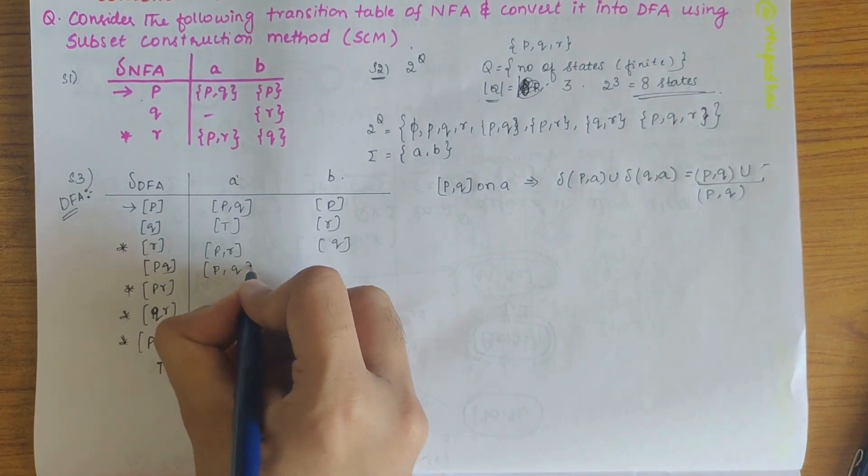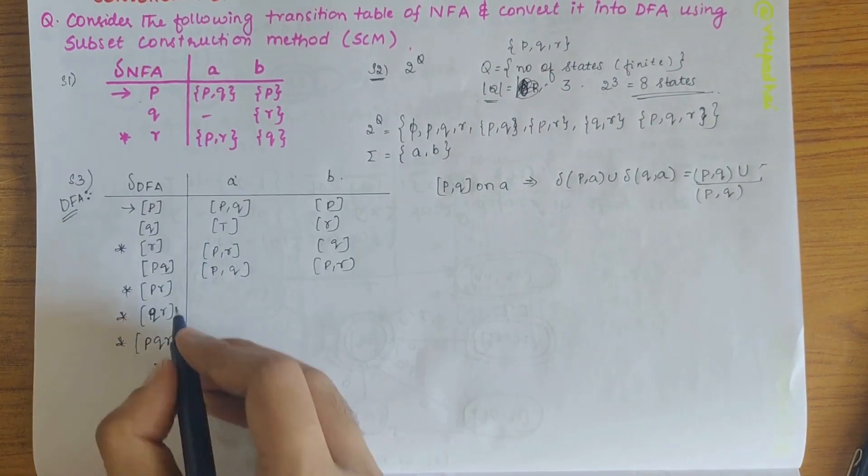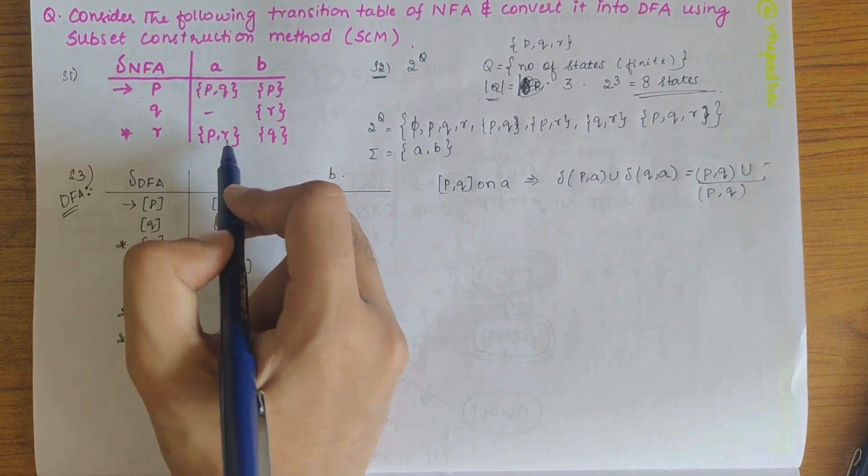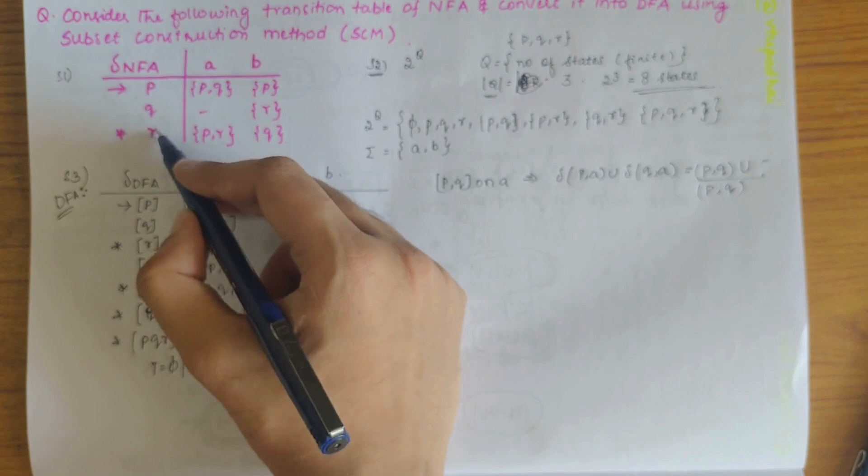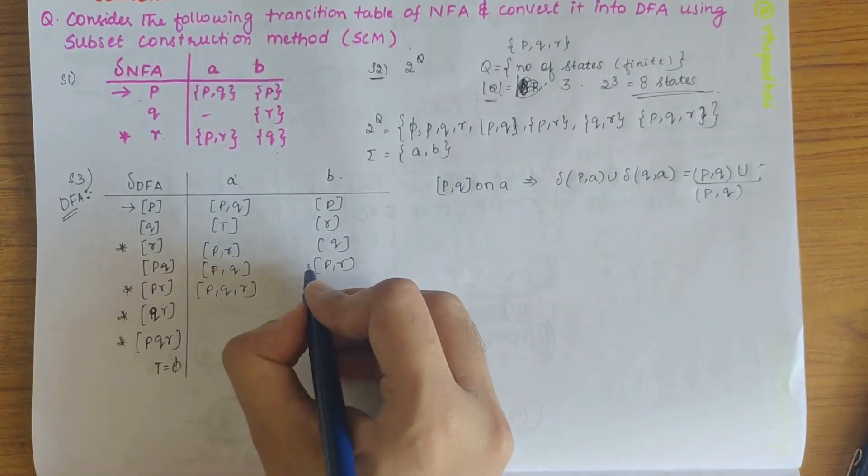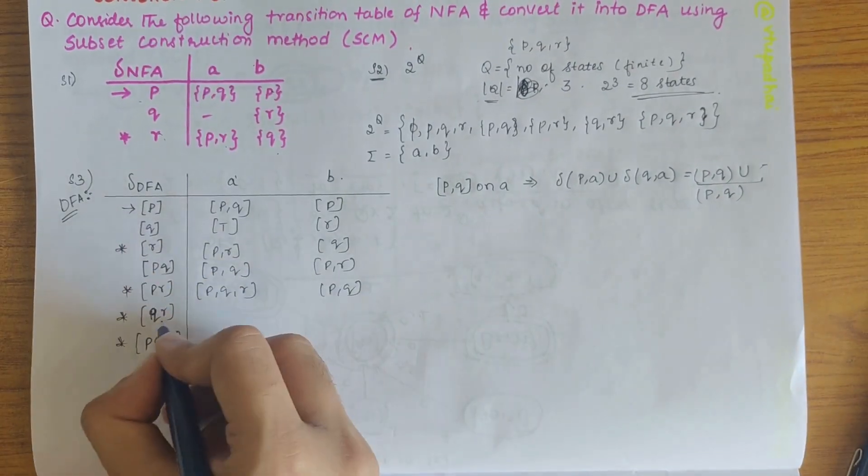So pq and here similarly pr. So pq and pr is there, so we can write it as pqr. And pr on b, so it is pq.